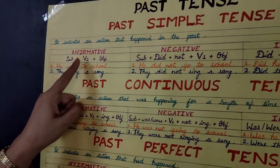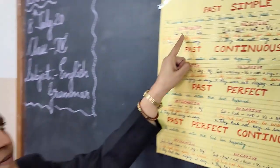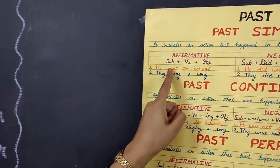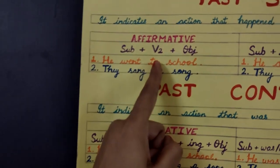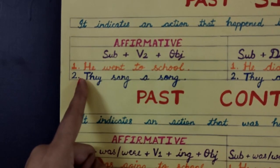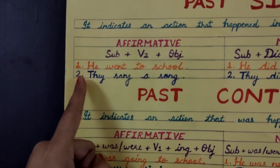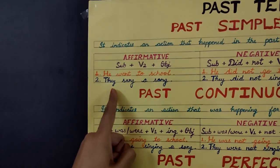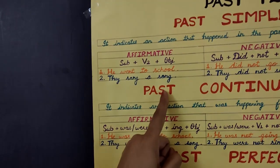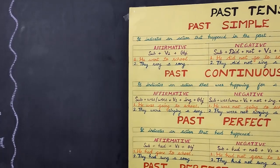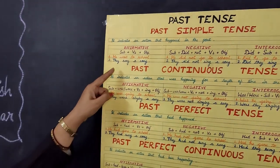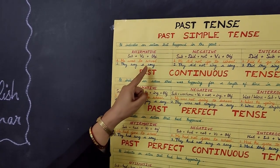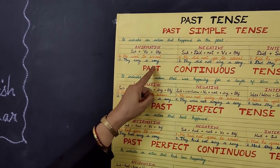Here you can see the structure of the affirmative sentence of past simple tense: subject plus verb second form plus object. For example: He went to school. They sang a song. Here, he and they are the subject, went and sang are the second form of the verb, and school and song are the object.